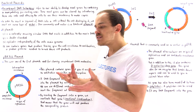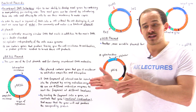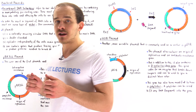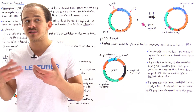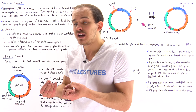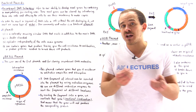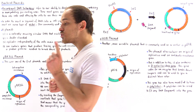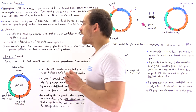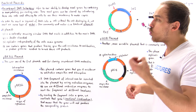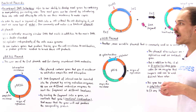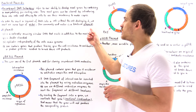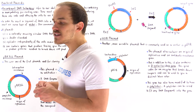We can't simply take a gene and place it into a cell. We first have to find a vector — a carrier that can take that gene and bring it into the cell without the cell destroying that DNA molecule. One typical vector that we use is a bacterial plasmid.